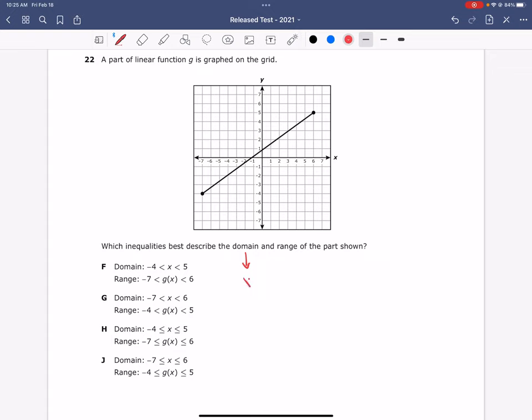We remember that domain is all the values of x that show up on the graph, and range is all the values of y, or f(x), or g(x), or h(x), or however the function itself is named. In this particular problem, it's named g, so you will see g(x) for each of the ranges.